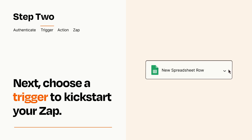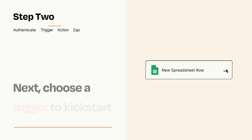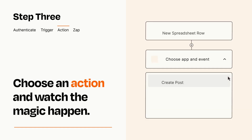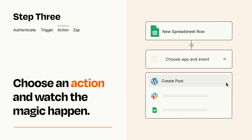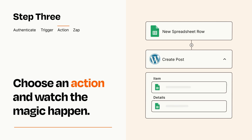This last part is where the magic happens. Choose the action you want to happen in your target app. You'll see a bunch of fields where you can specify the details of your Zap. You can type free form text or pull data in from your trigger step as needed.